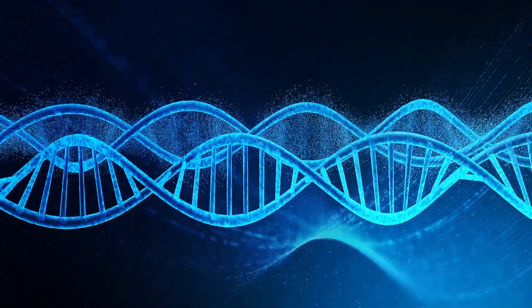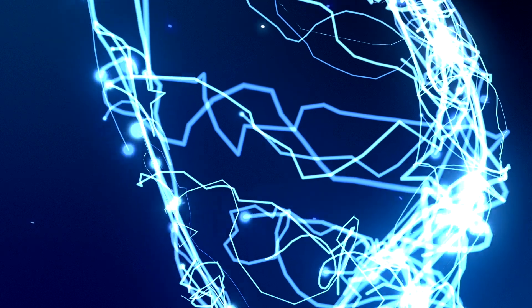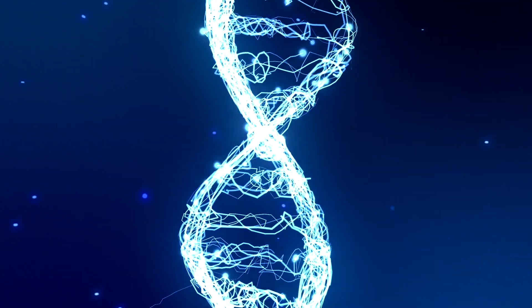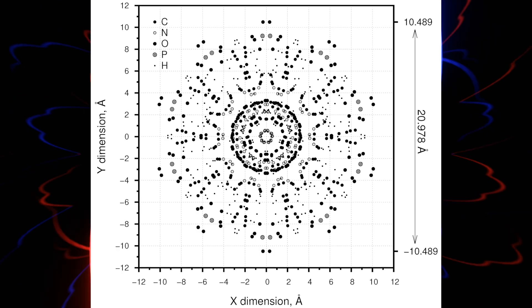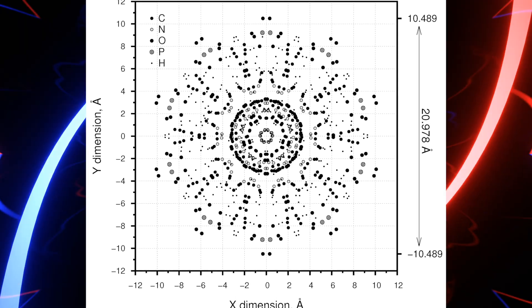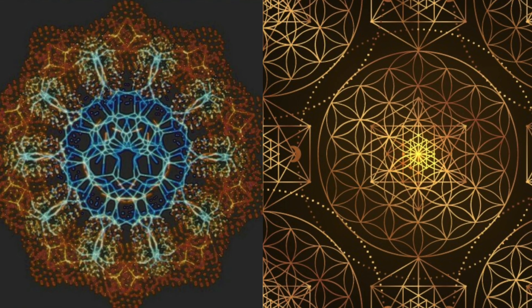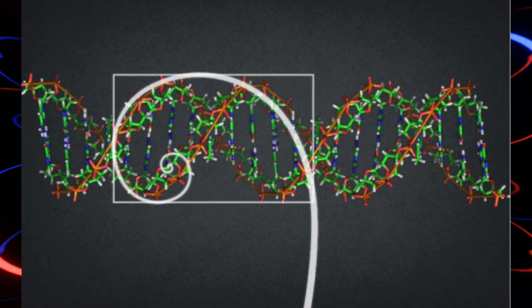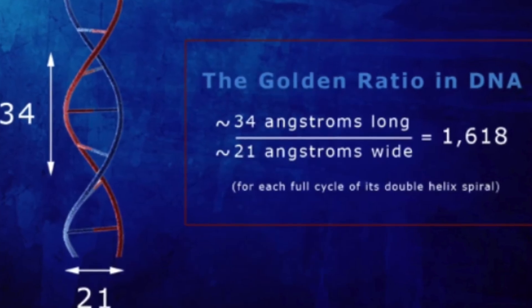In the structure of the DNA molecule, each complete cycle of its double helix spans 34 angstroms representing its helical length, and 21 angstroms in width representing its diameter. These numbers follow the Fibonacci sequence, and when 34 is divided by 21 it results in the divine proportion.